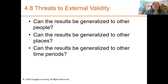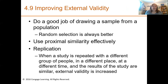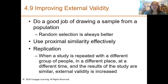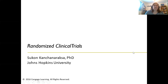Let's return briefly to threats to external validity. Can the results be generalized to other people, places, and time periods? Random selection will help your external validity. To improve external validity: draw a good sample using random selection; use proximal similarity effectively, being thoughtful about who you can and cannot generalize to; and use replication — when a study is repeated with a different group in a different place at a different time and results are similar, external validity is increased. Running your light therapy experiment in San Diego and finding very similar results would greatly help your external validity.